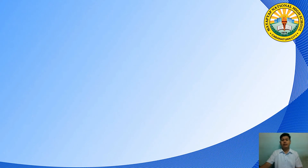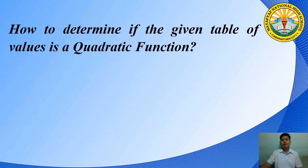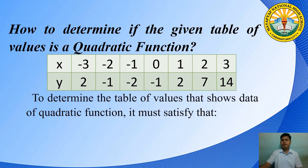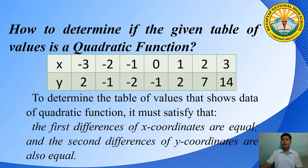We are done in determining if an equation is a quadratic function or not. How about if we have a given table of values? Can we determine if the table of values represents a quadratic function or not? The answer is yes. To determine the table of values that shows data of a quadratic function, it must satisfy that the first differences of x coordinates are equal and the second differences of y coordinates are also equal. But how can we show that?